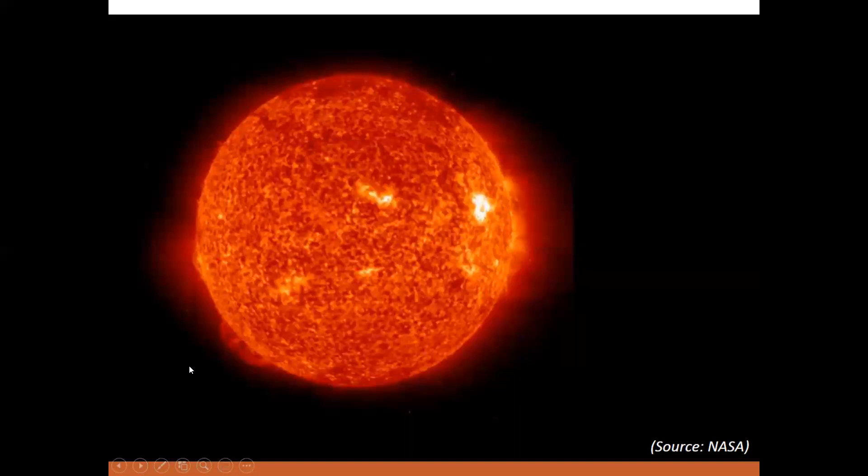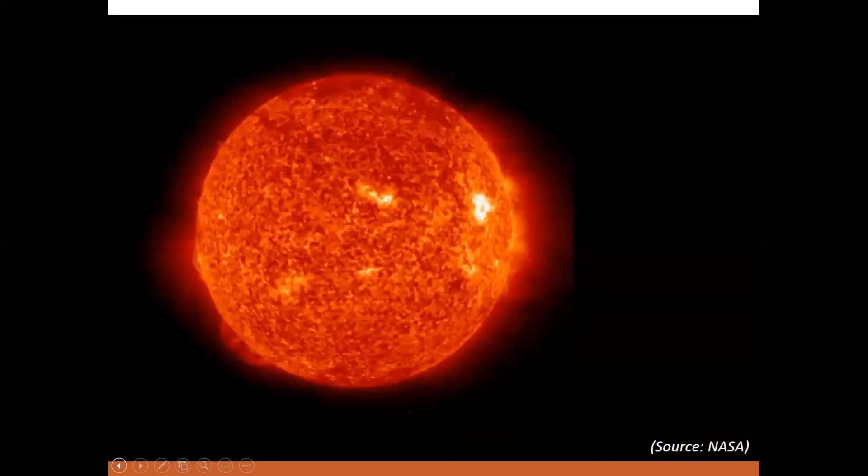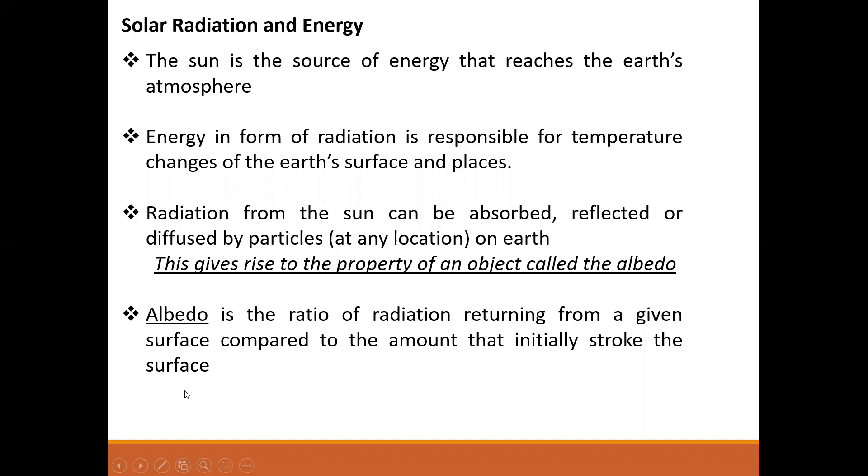Here we have a capture of the sun from NASA, which is basically a red ball that gives us radiation reaching the Earth's atmosphere and surfaces. The sun is the source of energy that reaches the Earth's atmosphere, the source of energy that we normally receive on Earth.